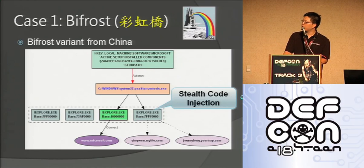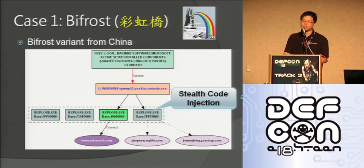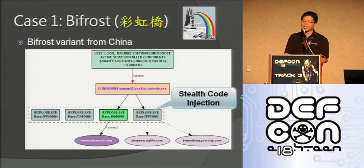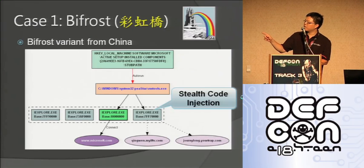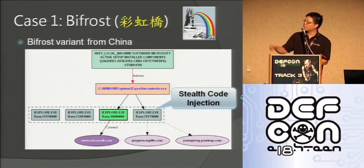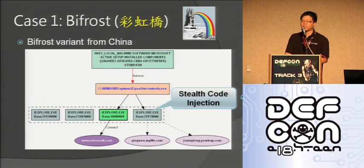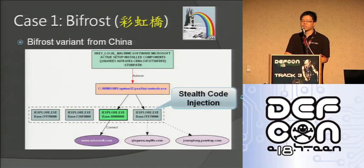The only way to find this suspicious code injection is to scan the memory and try to find the PE image. You will notice that it tries to do code injection into the IE browser. You will then see it access a series of URLs. The first URL it tries to access is Microsoft.com — it's checking whether network connectivity is available.